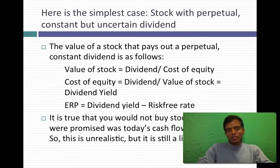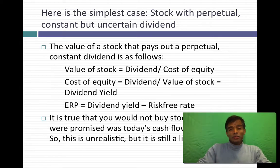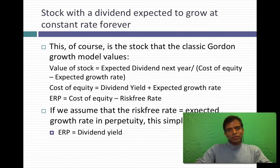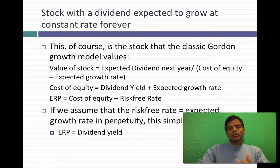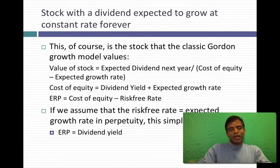But that's not the world we live in. We live in a world where stocks are expected to grow. Let's take the simpler example first: assume dividends grow at a constant rate forever — a growing perpetuity. The value of that stock is the expected dividend next year, which is a little higher than this year's dividend by the expected growth rate, divided by the difference between the cost of equity and the expected growth rate. This is the Gordon Growth Model, very widely used in valuation.